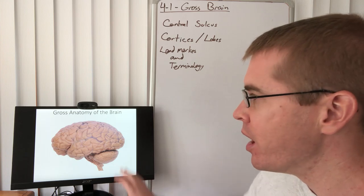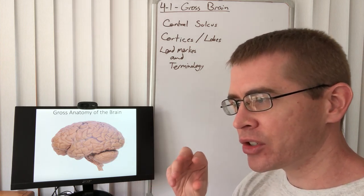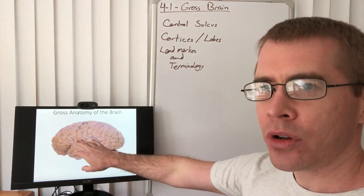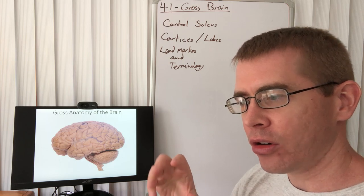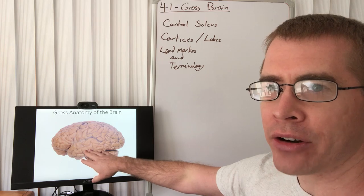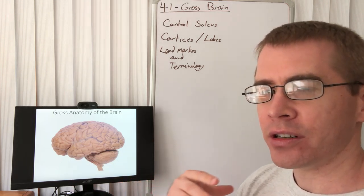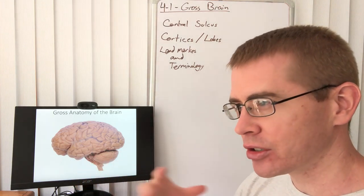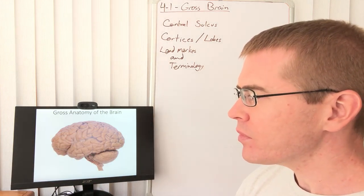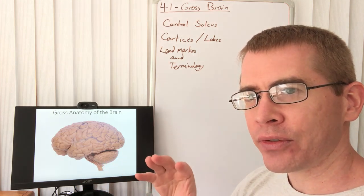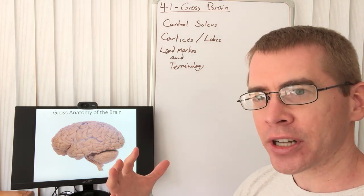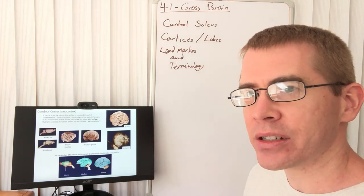Every human brain is tightly controlled during development so that the individual ridges and grooves called gyri and sulci, respectively, match a certain pattern. And that pattern is reproduced in every brain across different individuals. Because of this, we can identify these ridges and grooves, assign names to them, and discover their functionality. So that forms the basis of this lecture.